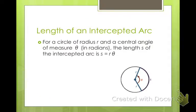To find the length of an intercepted arc, for a circle of radius r with a central angle of measure θ in radians, the length s of the intercepted arc is r times θ.